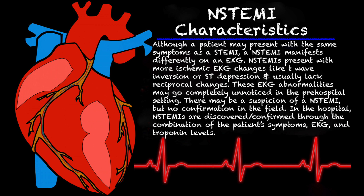These EKG abnormalities may go completely unnoticed, and typically do in the pre-hospital setting. There may be a suspicion of an NSTEMI — you may see T-wave inversion and depression accompanied with chest pain — but there's no actual confirmation in the field. In the hospital they'll note symptoms, obtain an EKG, and check troponin levels through lab work. This is why you can't tell a patient they're not having a heart attack. Even if you don't see ST elevation, we can't see everything in the field, so recommend going to the hospital.